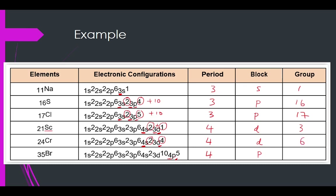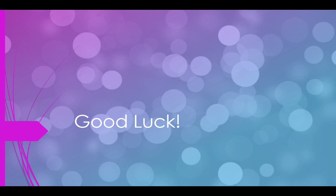So bromine is group 17. That is how you determine the period, block, and group from the electronic configuration. That's it for today. I hope you can really watch this video and try to understand it. Good luck. Bye.